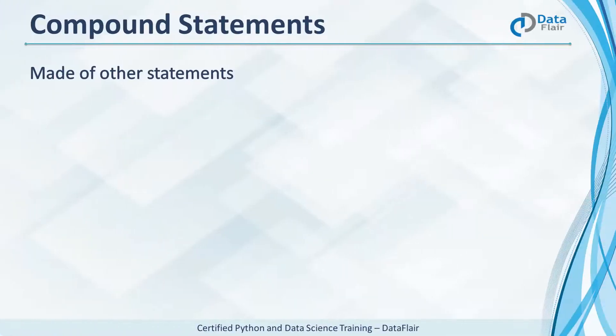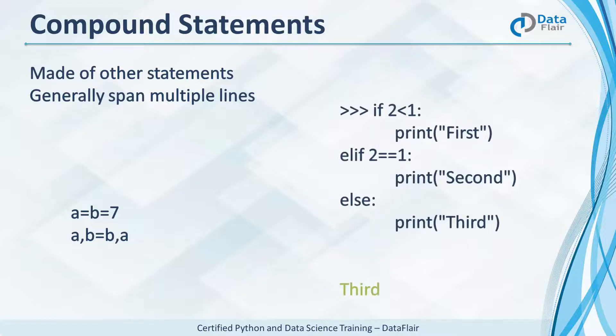Now compound statements are made of many other statements. They hold one or more clauses and generally occupy multiple lines. This is a multiple assignment statement and this is swapping two values. This is an if elif ladder and is a compound statement that we've put on 6 lines.